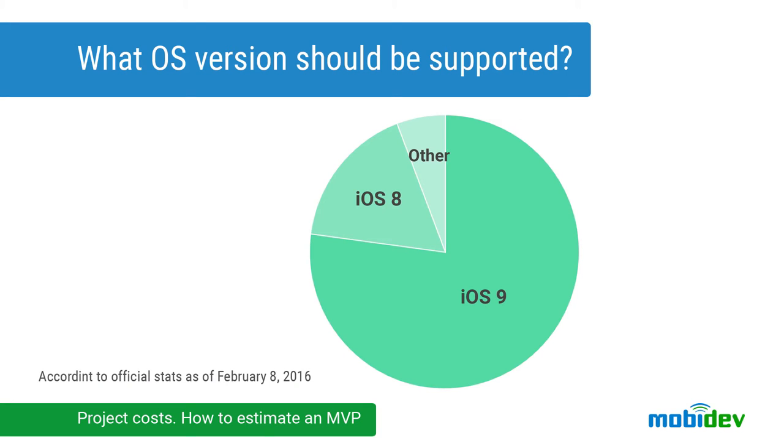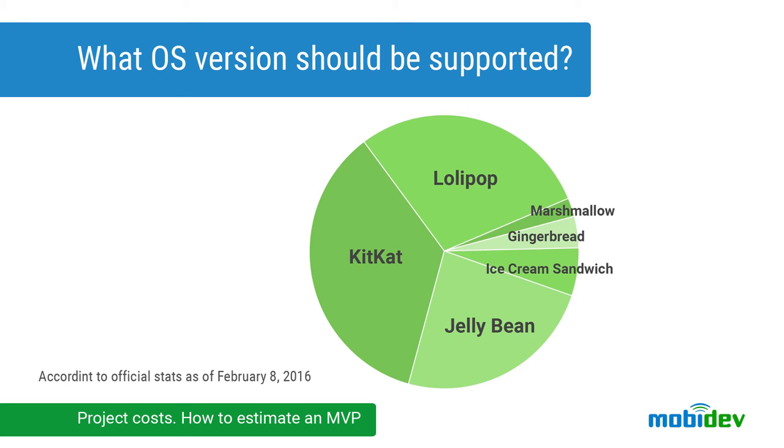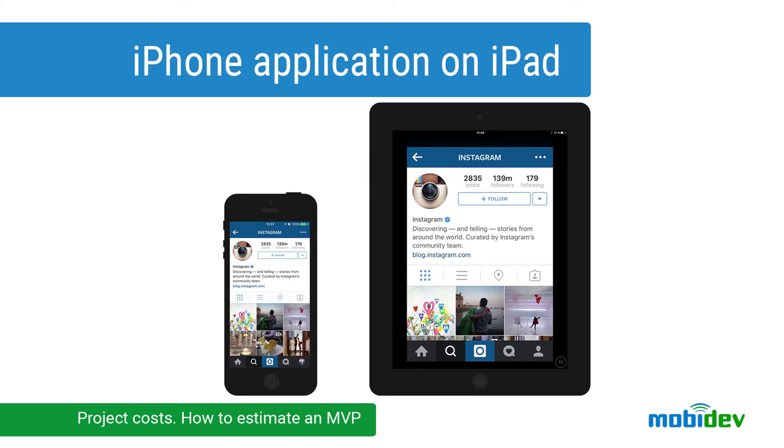What OS versions should be supported? Usually it's best to support the latest two OS versions for iOS and two or three versions for Android. It's important to look into the future and define OS versions which will be relevant. We should avoid supporting OS versions which will be obsolete at the moment of product launch. It's better to start development supporting only portrait mode and only for smartphones — even Instagram has only a smartphone version.